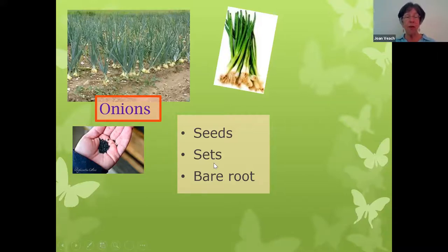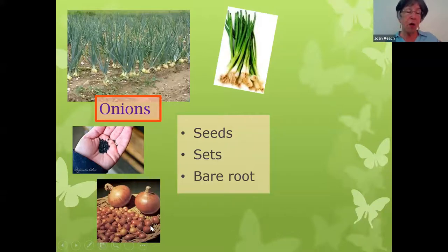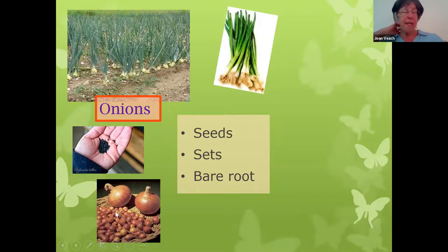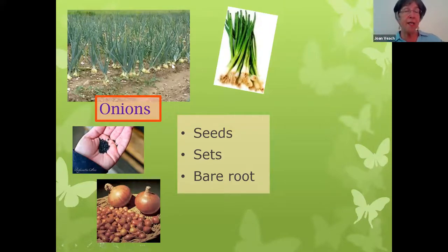The other way to grow onions is to start with sets. You can buy a whole bag of little mini onions — they're last year's onion, dried like a bulb. They'll start growing this year and you can use them to get green onions or grow different kinds of bulb onions. The only disadvantage to sets is they tend to bolt — making a tall flower stem — and the onion itself gets really pithy in the middle and is not good to eat.